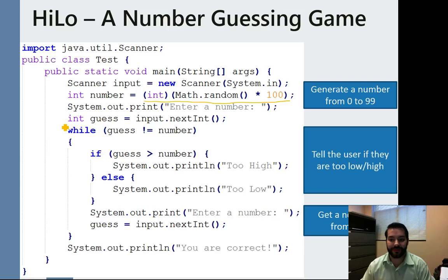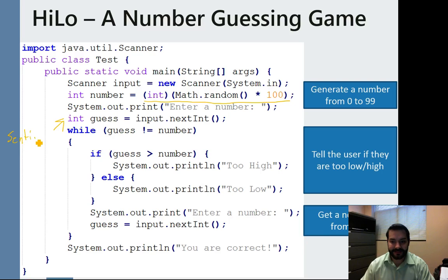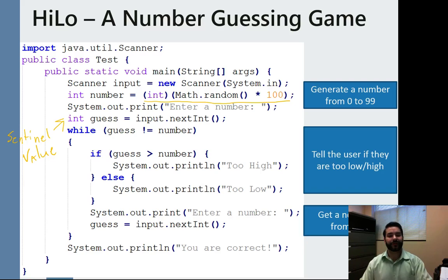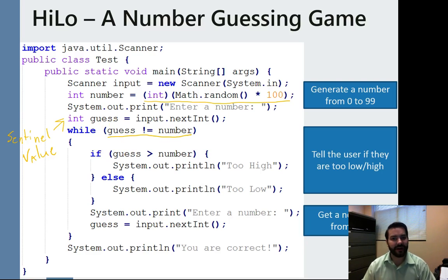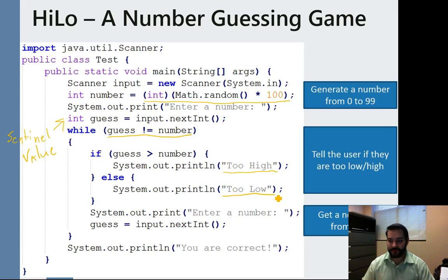So now what we do is we get our input from the user. This guess, we call this something known as my sentinel value. And we call that sentinel value because that's going to control my loop. If we take a look, you notice I only want to really tell my user if they are too high or too low.